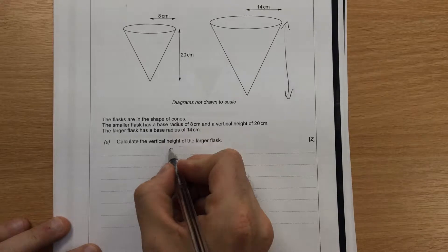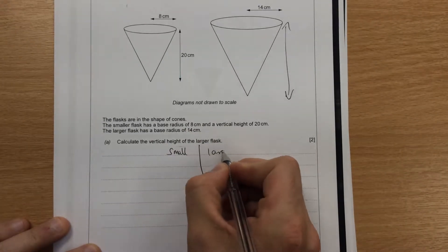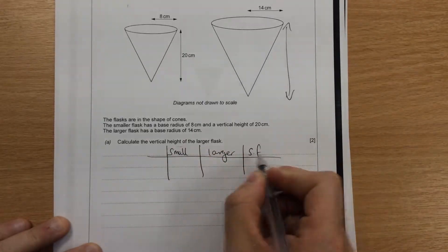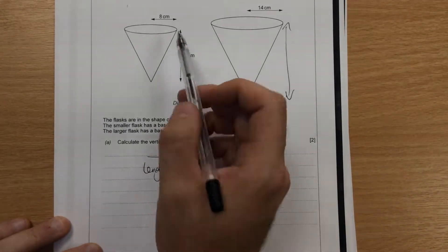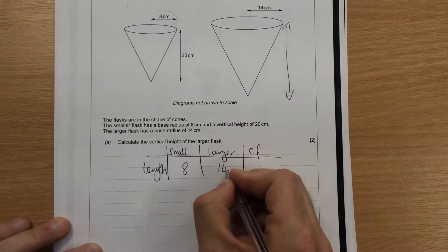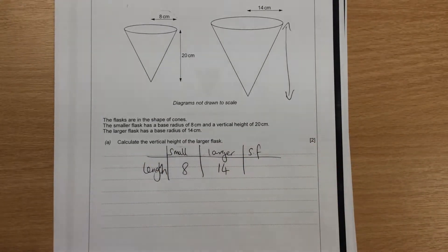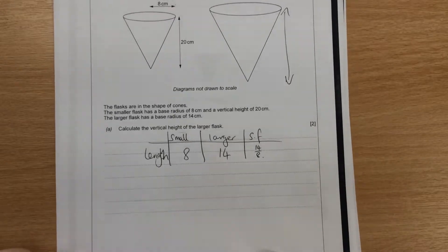So we're going to use the smaller shape, the larger shape, and a scale factor again. This time we're just going to worry about lengths for the time being, because the question is about lengths. So the smaller one has 8, and the larger one is 14, and then we're going to find a scale factor by doing 14 divided by 8. It's up to you how you work that out, but I'm just going to leave it as a fraction for now, because it might be easier when it comes to doing the multiplying.